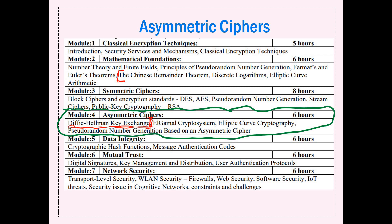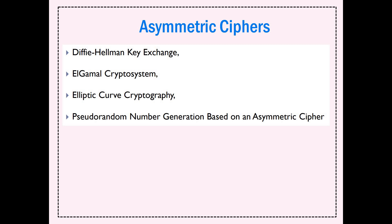What exactly are we going to study over here? Ideally, what we are going to observe is that we now know how the keys are to be generated by different methods, and we know the process or the algorithm associated with it. This particular segment is going to discuss about how we are going to exchange the keys between the transmitter and the receiver. That is what the topic is all about.